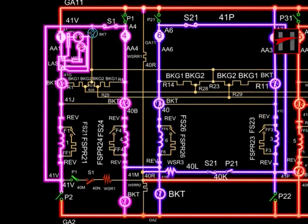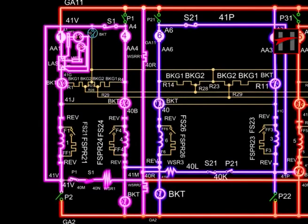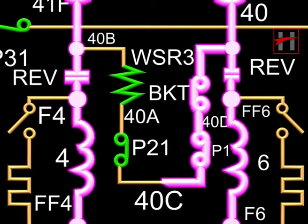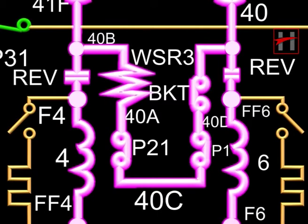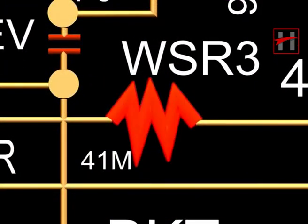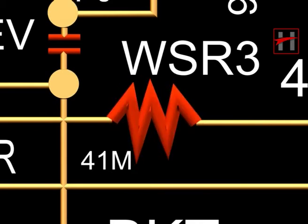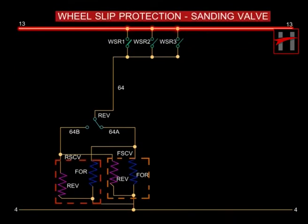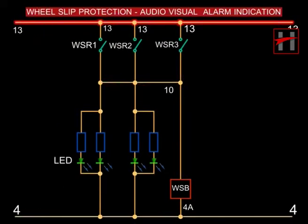Wheel slip is detected by comparing the armature voltage of the traction motors by connecting coils of the wheel slip relays through interlocks of corresponding power contactors, as shown in the past series. When wheel slip is detected, the following takes place: A) reduction of excitation, B) sanding, C) audio-visual alarm. We will now discuss the concerned circuits one by one.